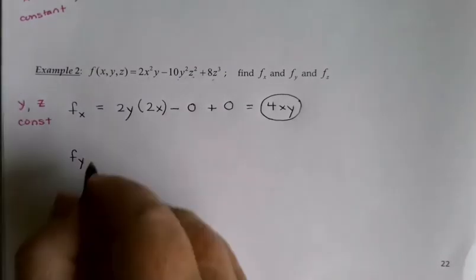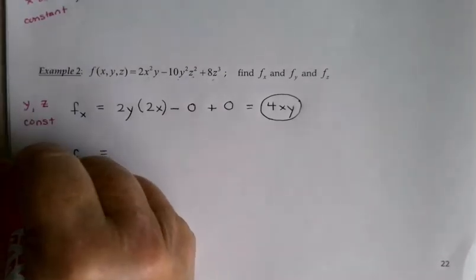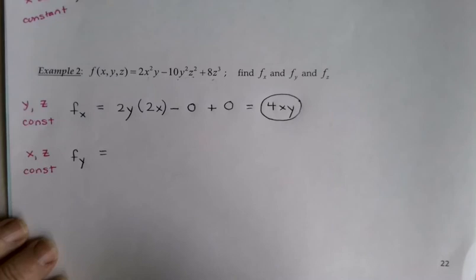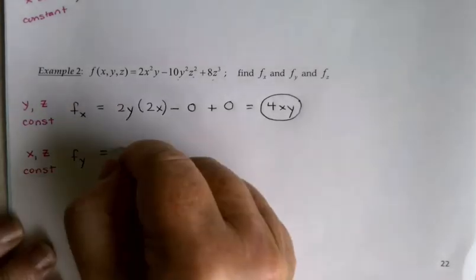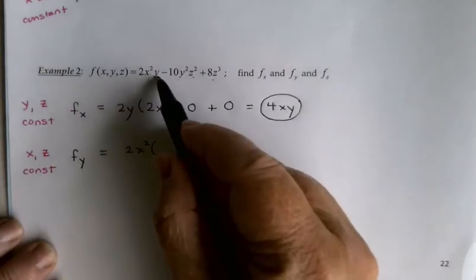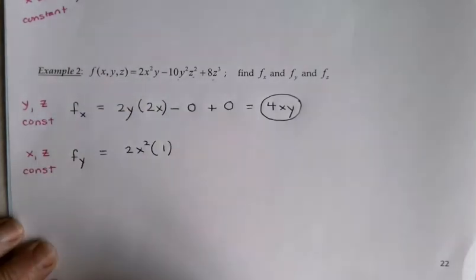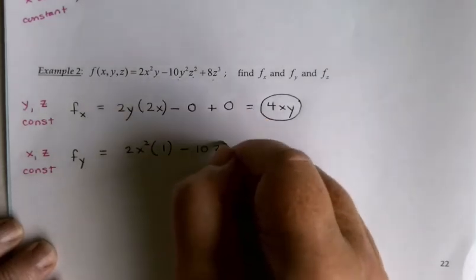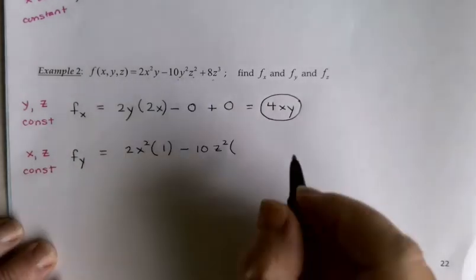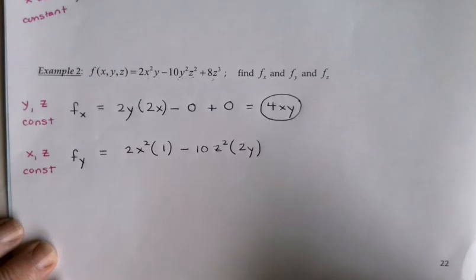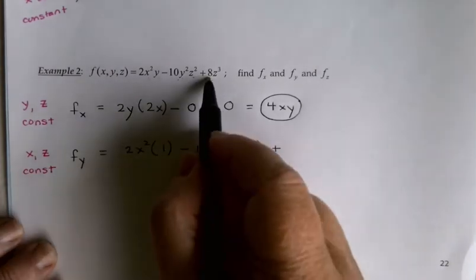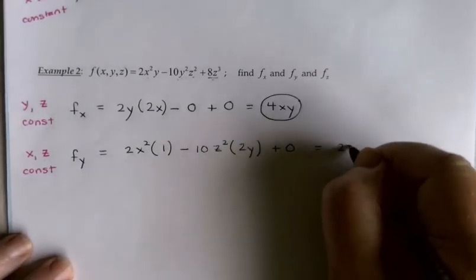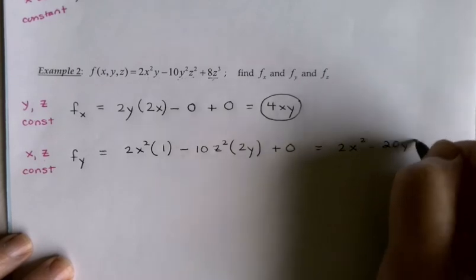For f sub y, x and z are treated as constants. The first term: 2x squared is a constant multiplier times the derivative of y, which is 1. Minus: 10z squared is a constant multiplier times the derivative of y squared, which is 2y. The last term is constant so its derivative is 0, giving 2x squared minus 20yz squared.